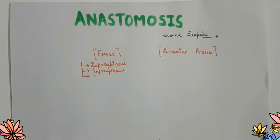Hello friends, this is Samarth and today we are going to learn about anastomosis around the scapula. I have already made a video on anastomosis around the elbow joint where I explained what the term anastomosis means. Today we are going to talk only about anastomosis over the scapula. You could refer to my previous video if you want to. So let's get started.